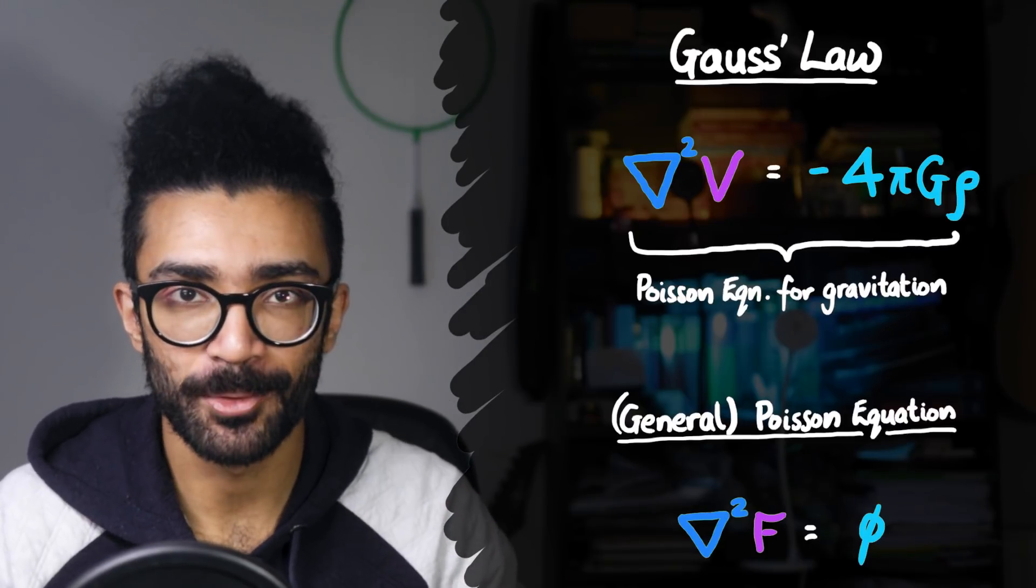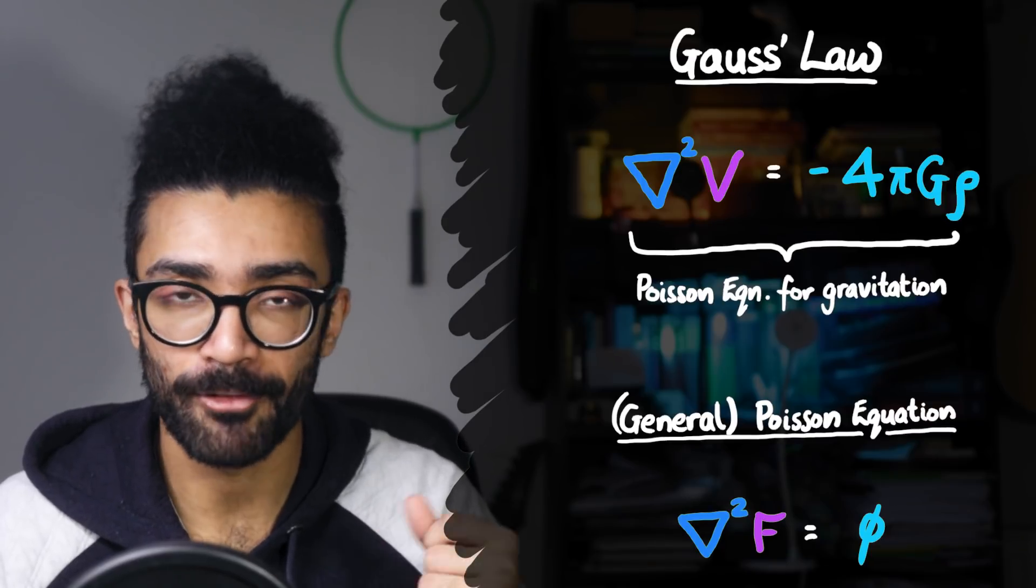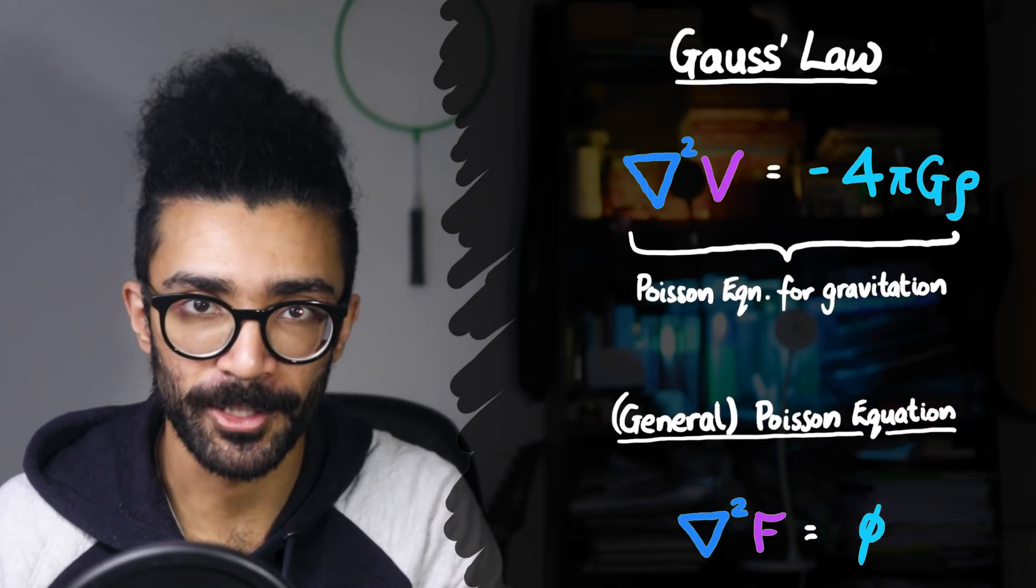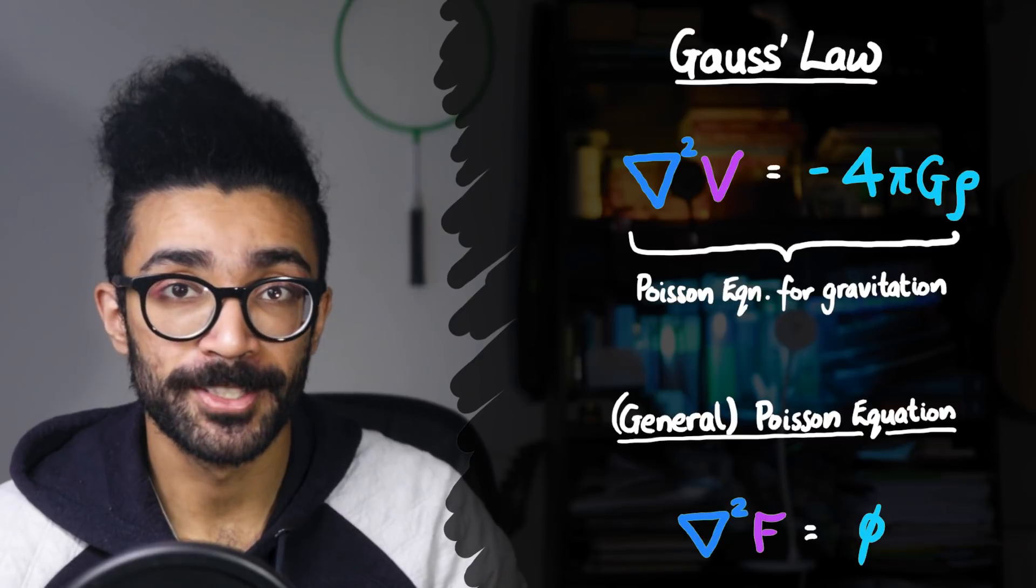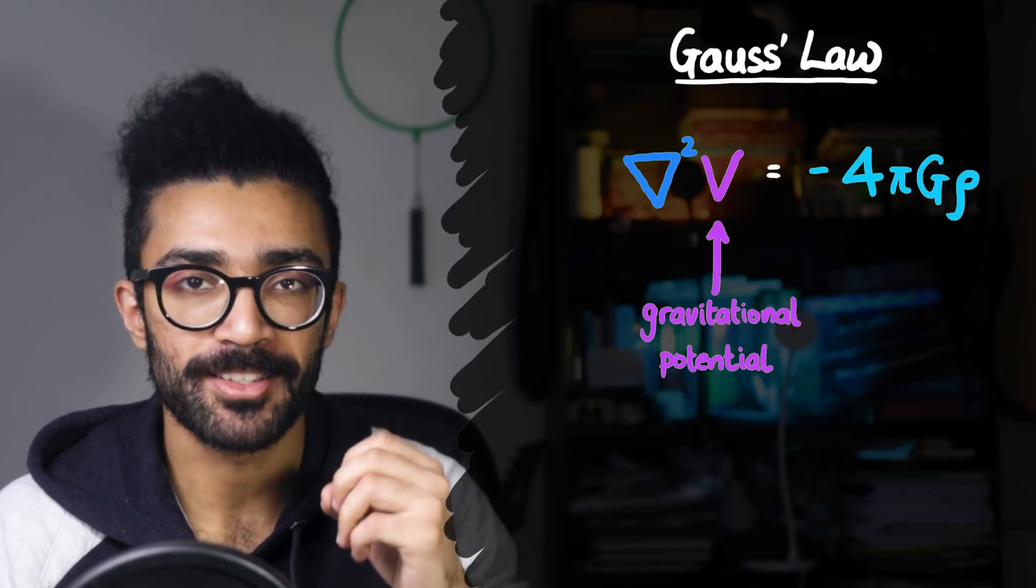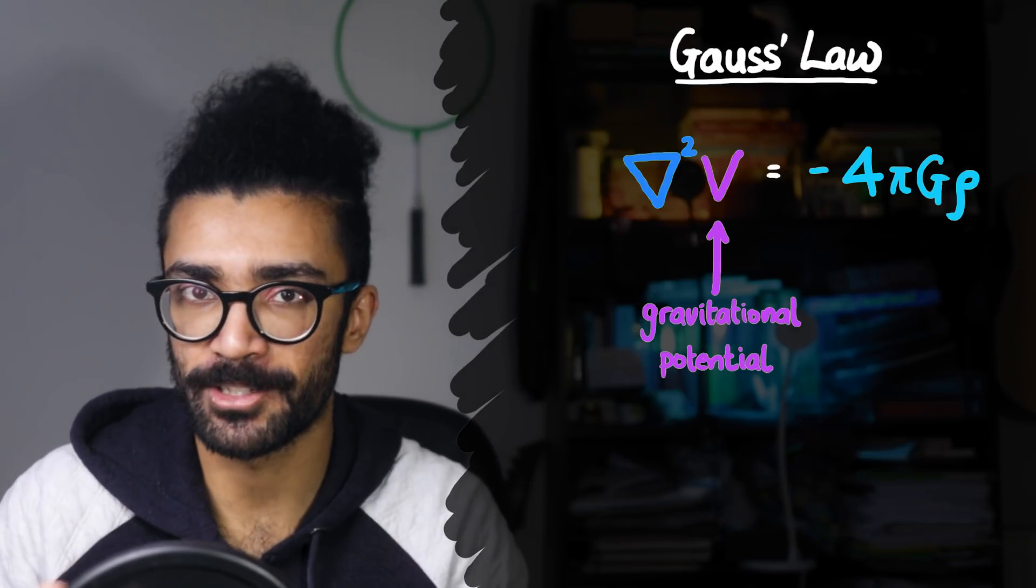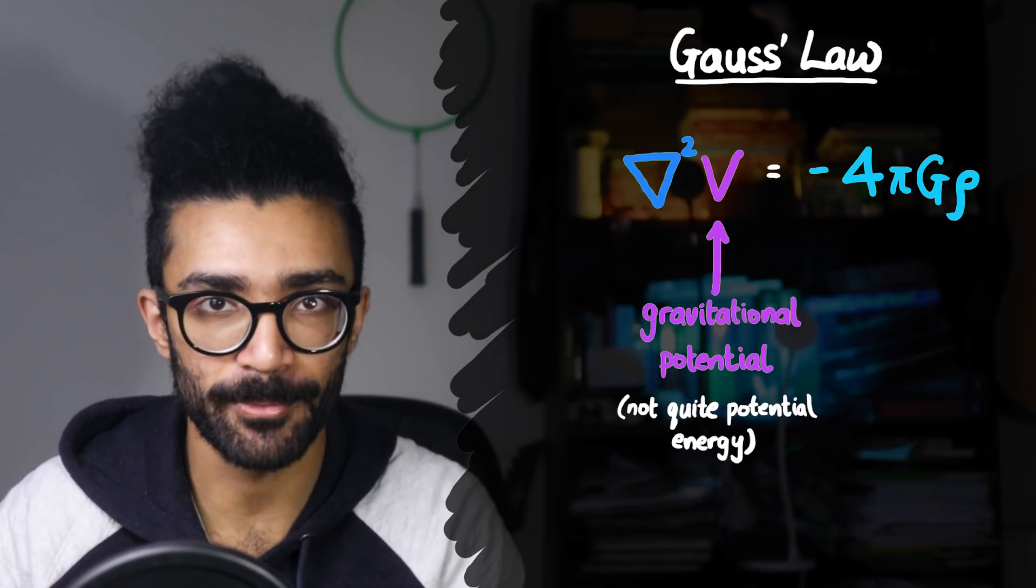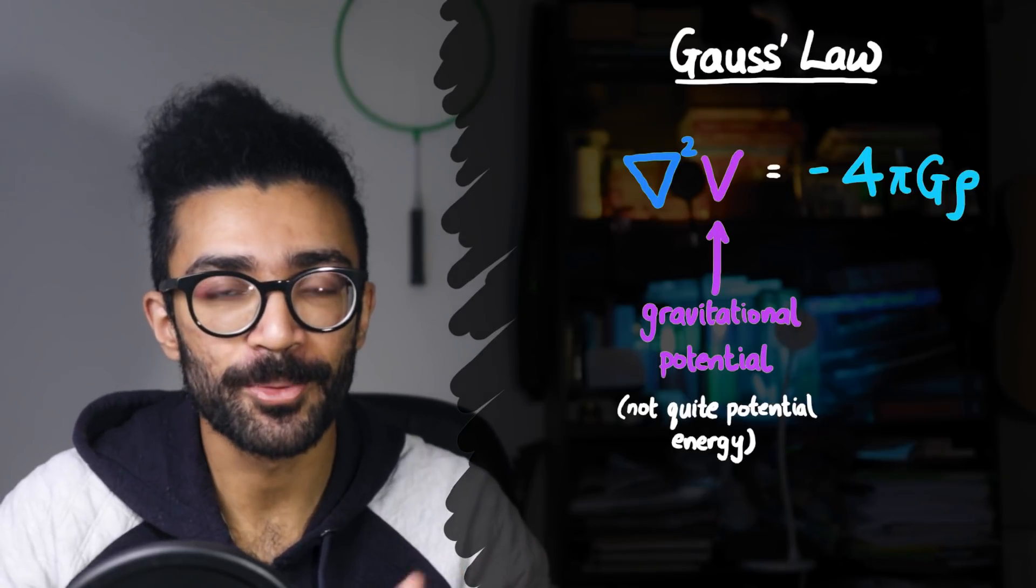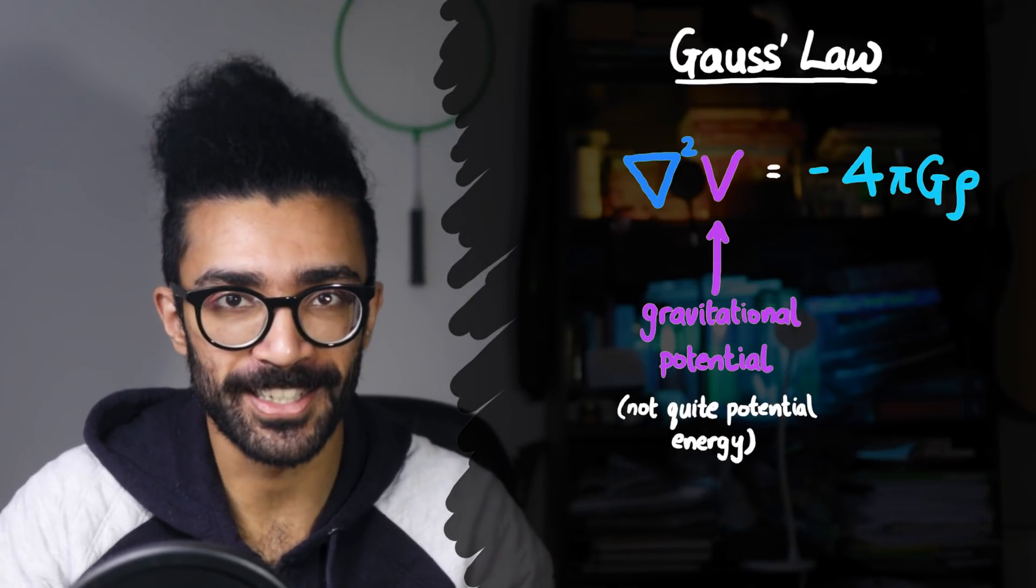By the way, the scalar field that we've substituted in here, V, is known as the gravitational potential. Many of you may have heard of this and it's quite similar to a gravitational potential energy, but it's not quite the same thing. What exactly the differences are between those two? Well, I'll leave that for you to dig into.